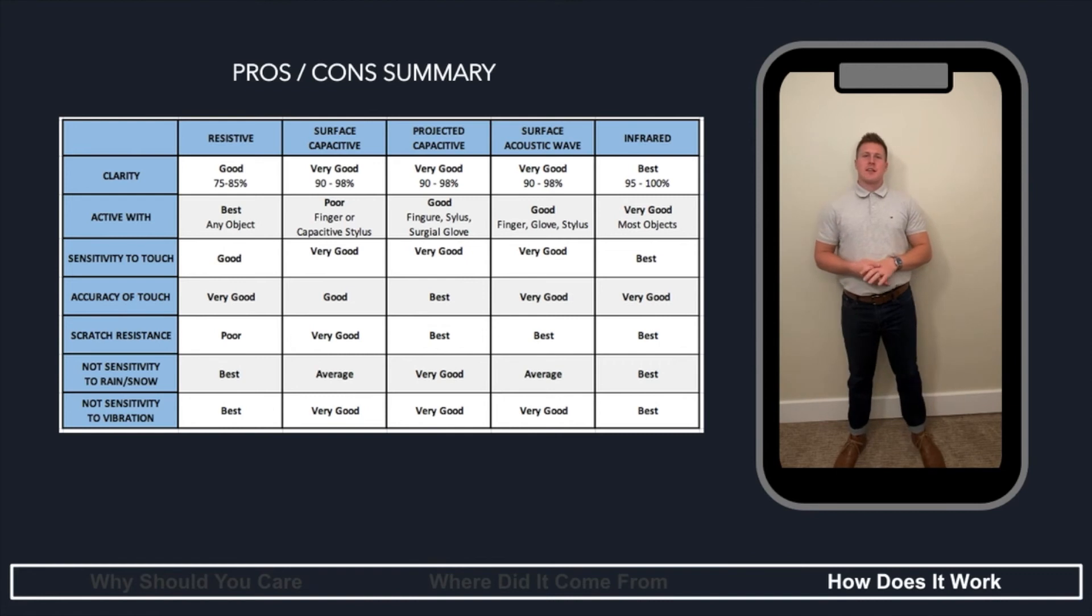Next, we have surface and projected capacitive touchscreens. So these are going to be pretty similar because they use that same technology of the layer of electrodes and sensing the conductivity of the skin of your finger. However, the projected is going to be a little bit better in almost every category because it's using more electrodes and more layers to sense that conductivity. So these are going to be what you find mostly in your phones, your tablets, your touchscreen laptops. This is because it has pretty good clarity. It's pretty sensitive to your touch, and it's also really durable. So it's good. But the disadvantage to this is you can't answer your phone with gloves, like April tried to.